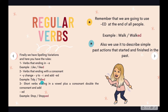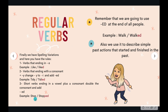Rule three: short verbs ending in a vowel plus consonant — double the consonant and add 'ed.' For example, 'stop' is a short verb ending in a vowel plus consonant. You double the letter 'p': 'stop' becomes 'stopped.' Make sure you learn these spelling variation rules because they are exceptions to the common rule.